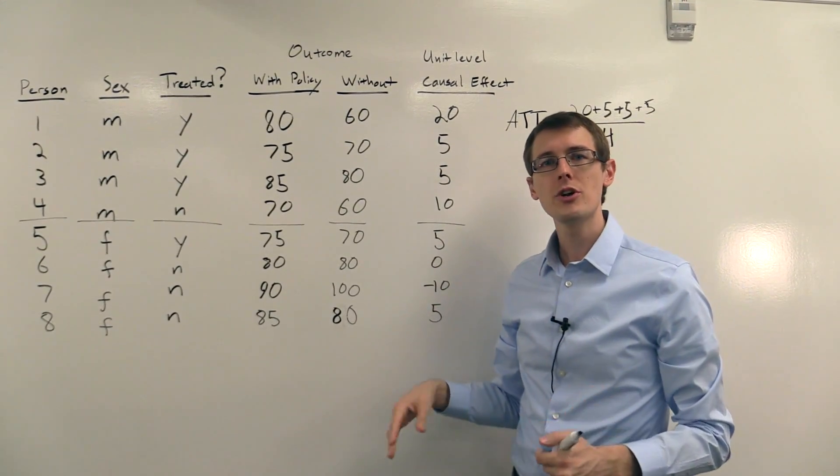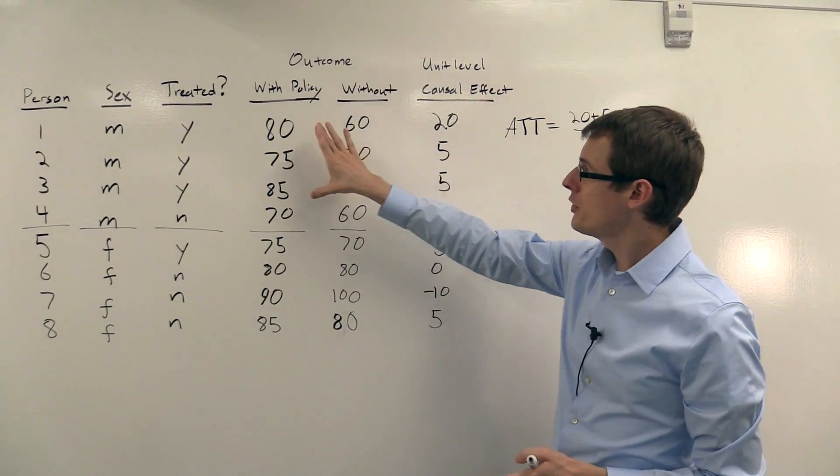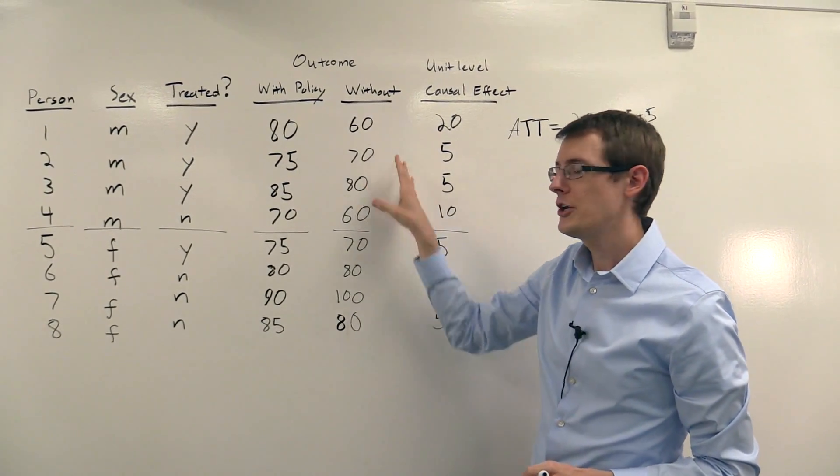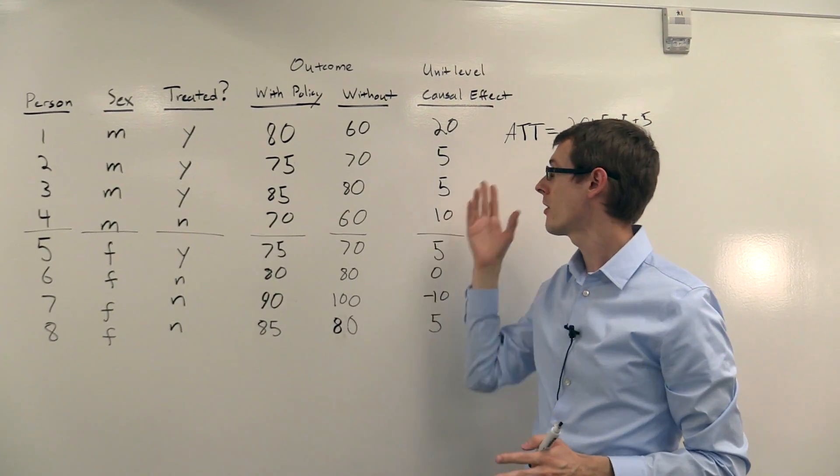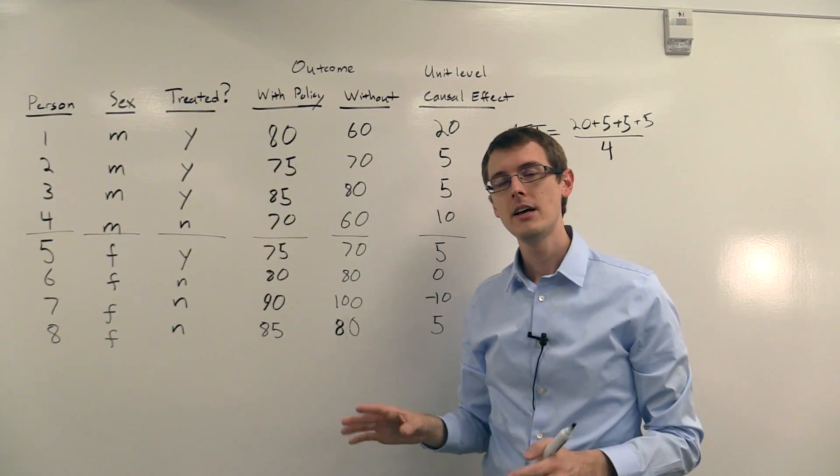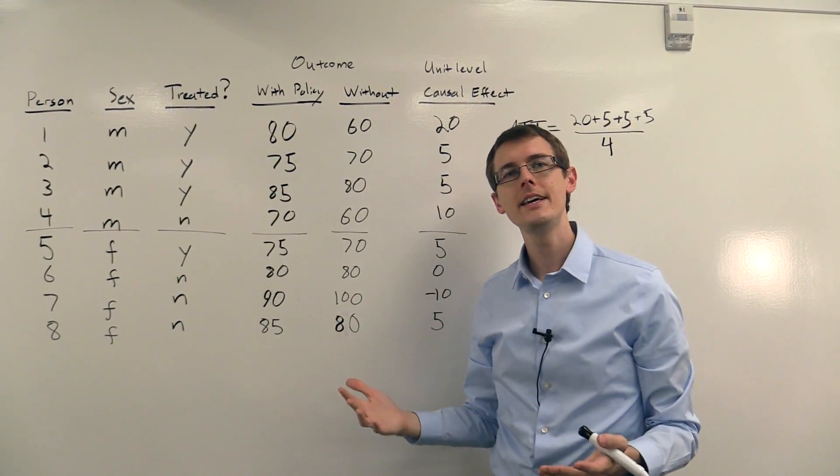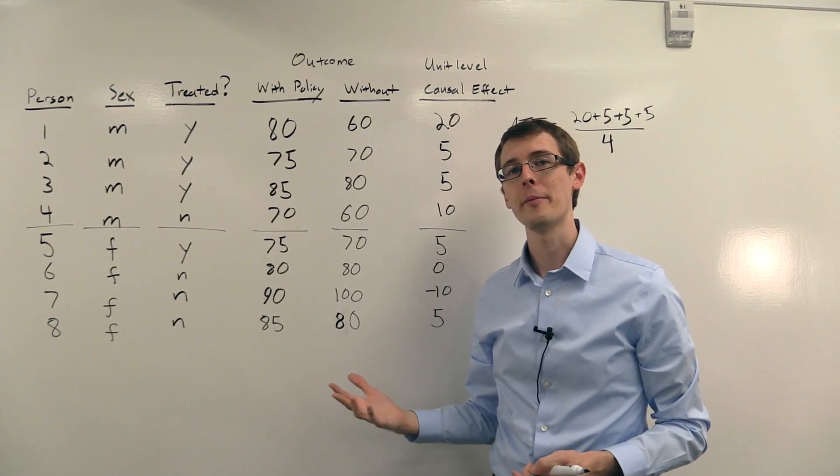Now under the unconfoundedness assumption or other assumptions, even though you don't observe both of these columns, you're still going to be able to compute this number, ATT, from your data, as well as ATE, or CATE, or other parameters of interest.